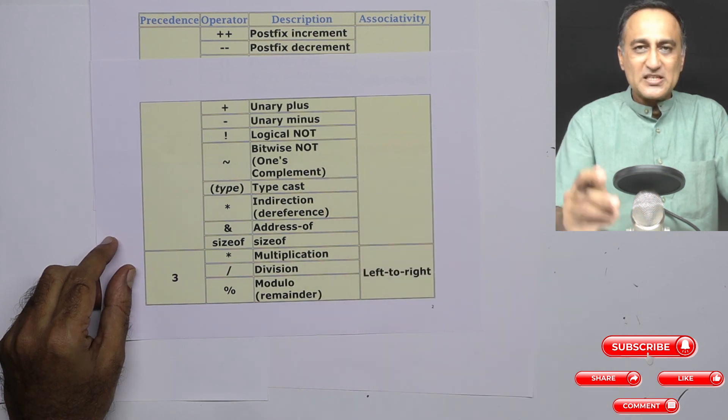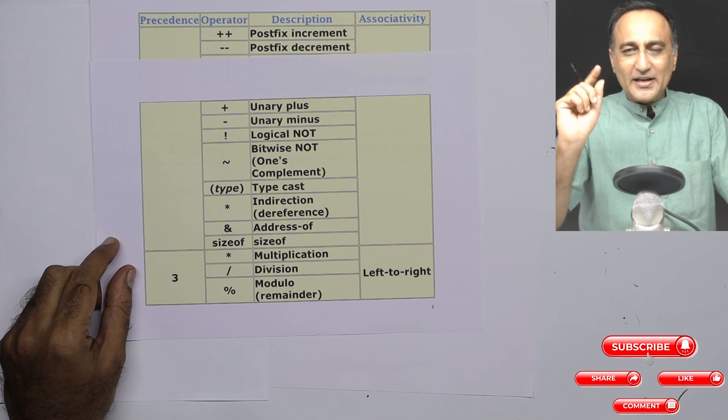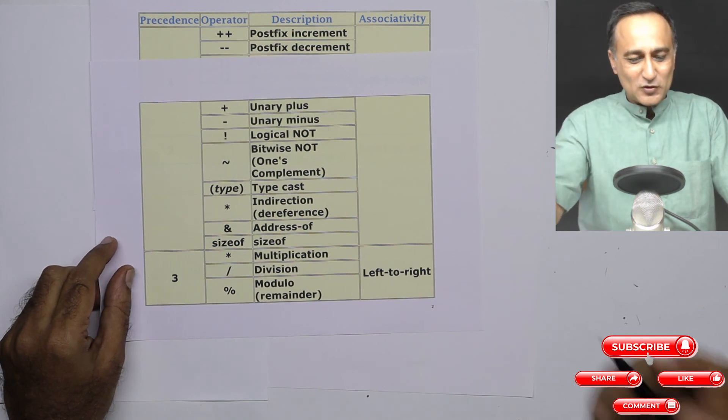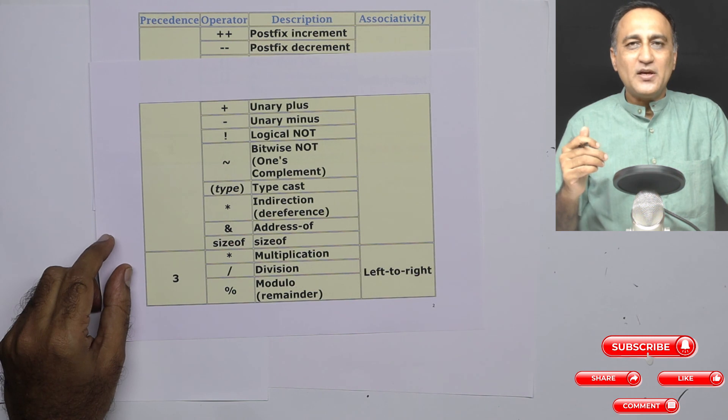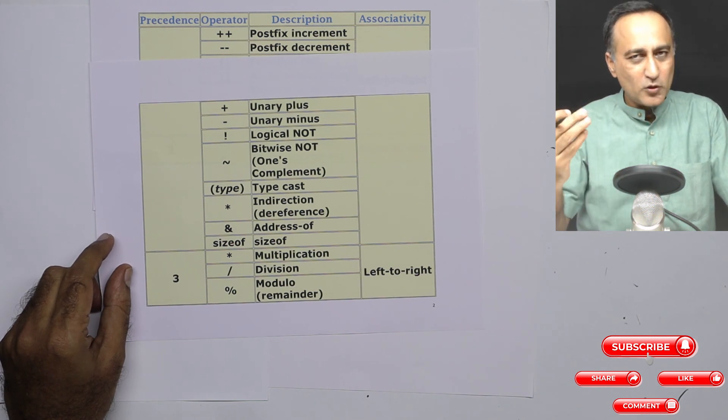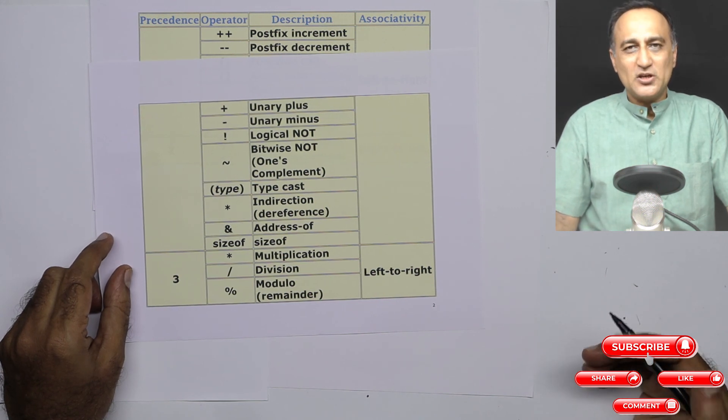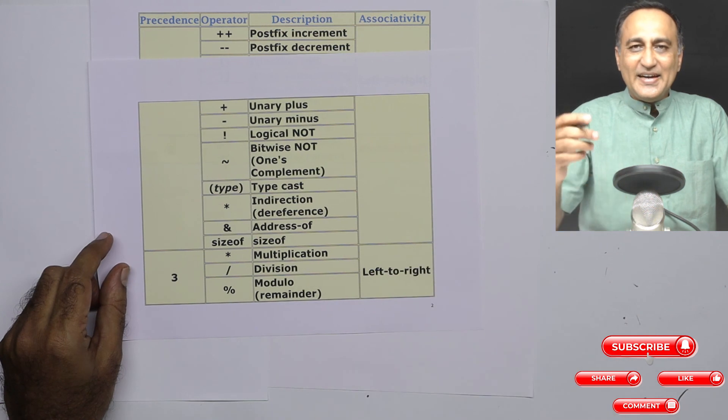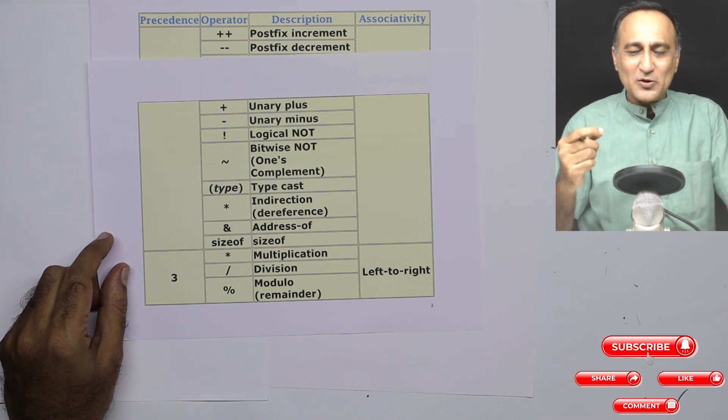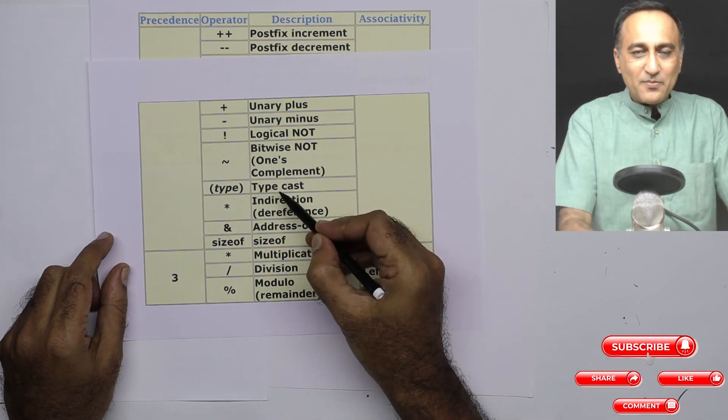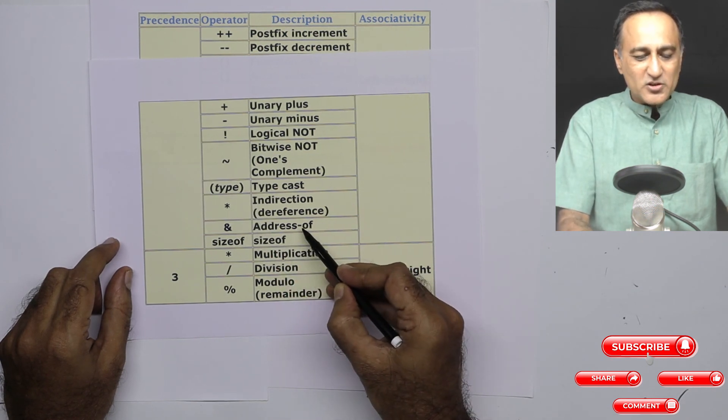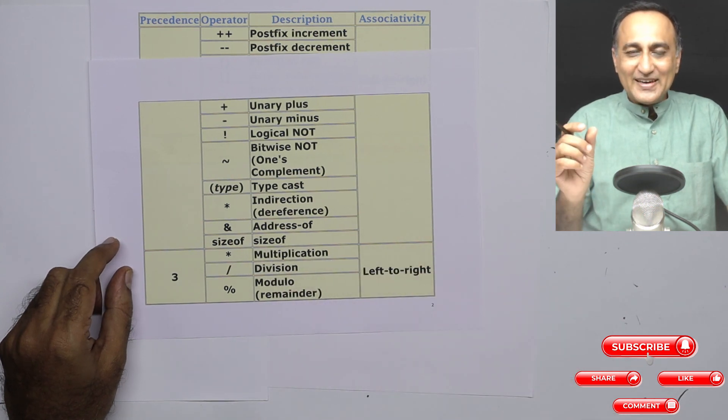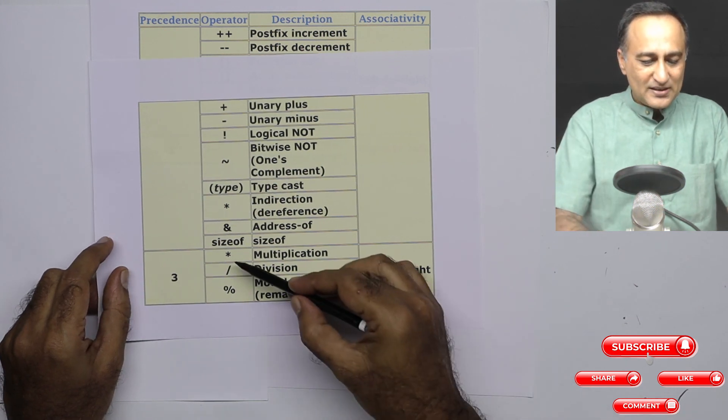Unary minus, logical NOT means suppose something is true, if I say not, it will make it false. Something is false, if I say not, it will make it true. Bitwise is to change the numbers representation in the computer. Suppose something is represented as 1s and 0s. We all know that everything in computers is represented as 1s and 0s. So what this bitwise NOT does is it flips the bit. That means it makes 1s as 0s and 0s as 1s. Typecast, this will come when we're taking a look at certain examples. This is relevant in pointers. This we have already used in scanf, sizeof to find the length of a variable or a particular data type on a given hardware where you're running your C program.